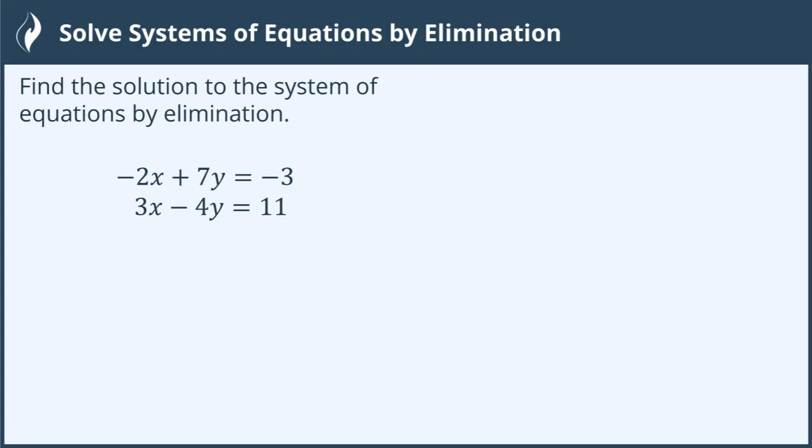We're looking for a solution to this system of equations. So a solution to a system of equations is going to be an ordered pair that's going to look like x comma y. I need to find both x and y, and it tells us to use elimination.